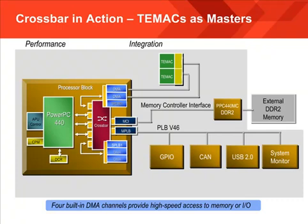For more information about the hard TMAC, refer to the Virtex-4 Embedded Tri-Mode Ethernet MAC User Guide, and likewise there is a corresponding document for the Virtex-5 TMAC. For more information about the soft version of the Ethernet MAC LogiCore IP, check out the LogiCore Tri-Mode Ethernet MAC User Guide. LogiCore refers to a core built from CoreGen and built with LUTs and registers.